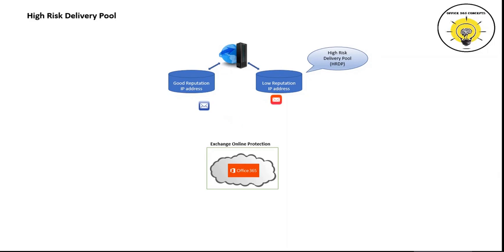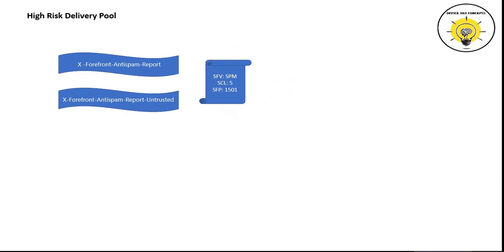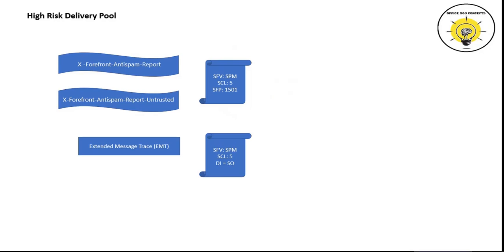So if a spam email will be sent out from an Office 365 tenant, those emails will be processed by High Risk Delivery Pool IP servers, and the legitimate emails will be processed by the good reputation IP address servers. Now the question arises: how can a sender identify if a particular email was processed by the High Risk Delivery Pool server? We can check two tabs within an email header: X-Forefront-Antispam-Report and X-Forefront-Antispam-Report-Untrusted. If these tabs contain values SFV:SPM or SCL 5 and SFP 1501, that means this particular email was routed through High Risk Delivery Pool servers. If we run extended message trace and we see SFV:SPM, SCL 5 or higher, and DI equal, that means the email was routed through High Risk Delivery Pool servers.